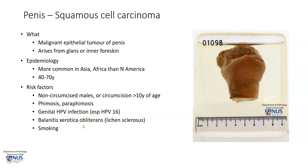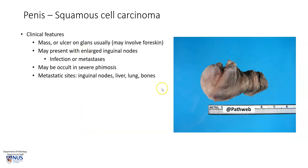There is also a connection with a background or history of lichen sclerosis or balanitis xerotica obliterans, and also a connection with smoking. Clinically, this usually appears as a mass, as we saw, or sometimes an ulcer on the glans, and it may involve the foreskin.